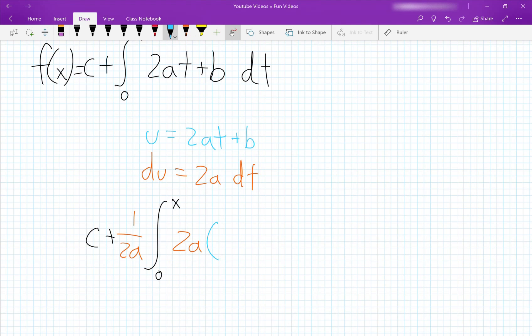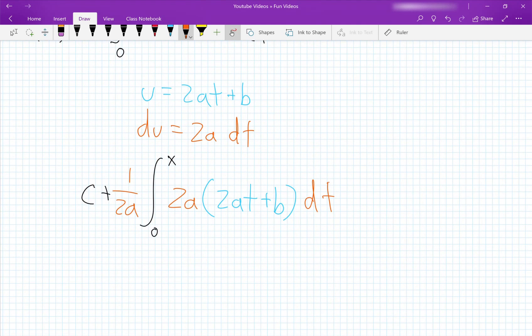And then we can multiply that by 2at plus b dt. So now that everything is set, we can finally do our u substitution to move everything from the t world to the u world.